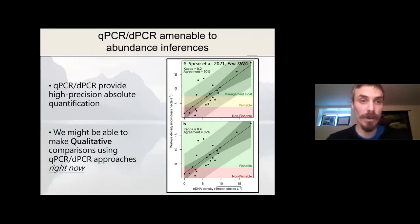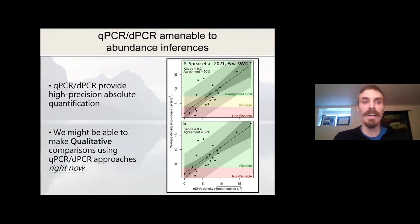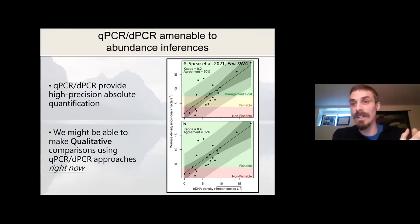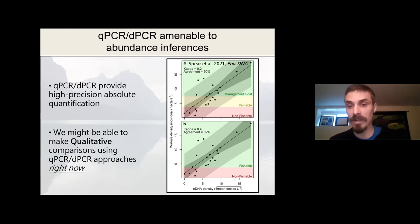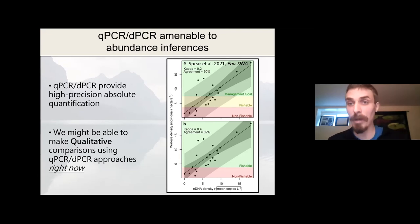Digital droplet PCR and quantitative PCR, however, I think are very amenable to these types of analyses. qPCR and ddPCR provide high-precision, absolute quantification of the exact concentration of eDNA present in your environmental samples. Research emerging right now suggests we're basically at the point where we might be able to make qualitative comparisons using qPCR and ddPCR approaches. A paper published in Environmental DNA Journal by Mike Spear demonstrated that they actually could pretty reliably predict whether or not walleye populations were above a critical low threshold between fishable and non-fishable just by sampling eDNA.